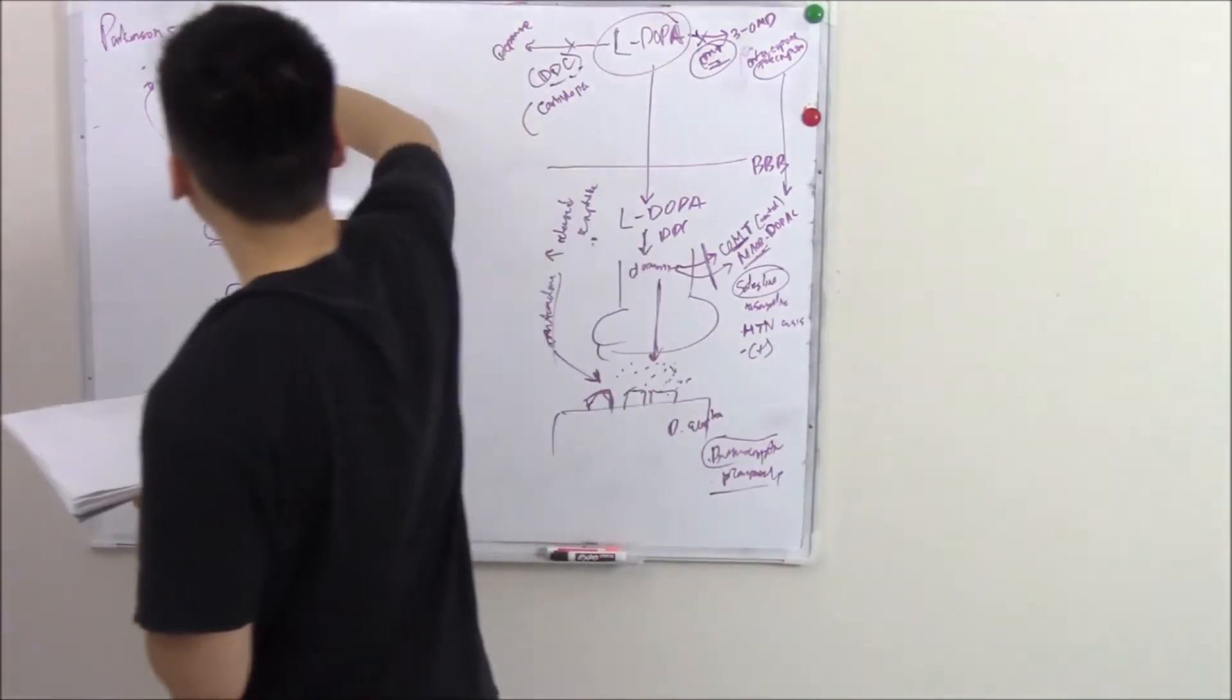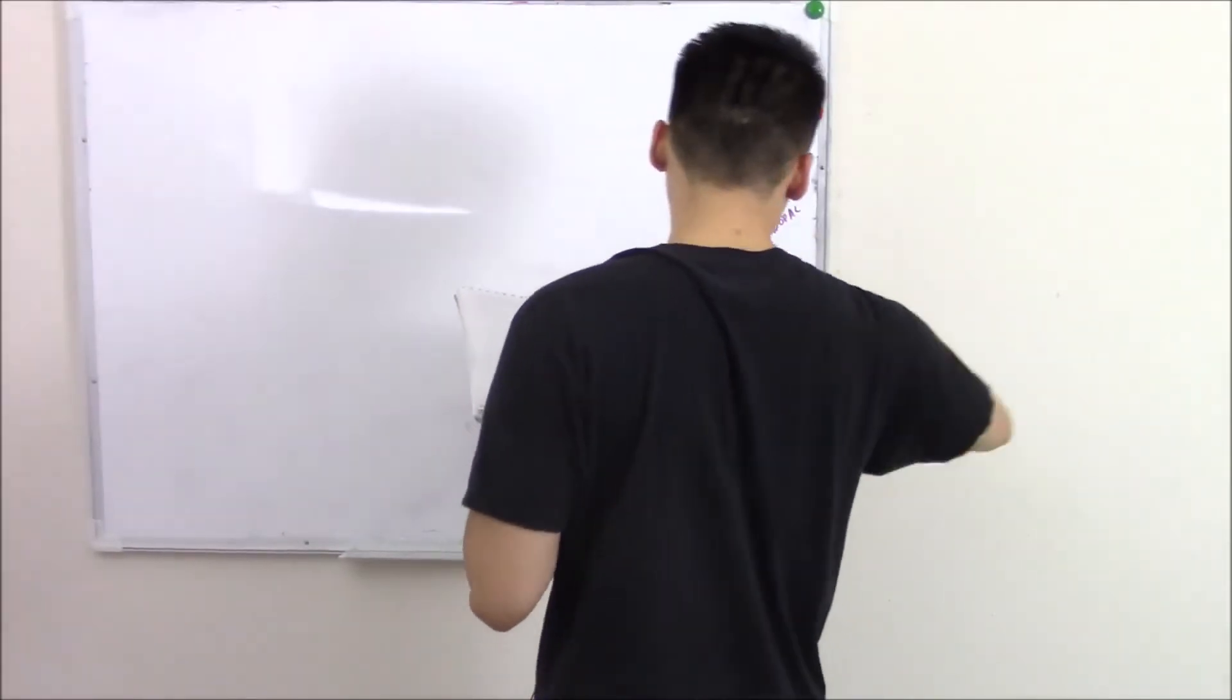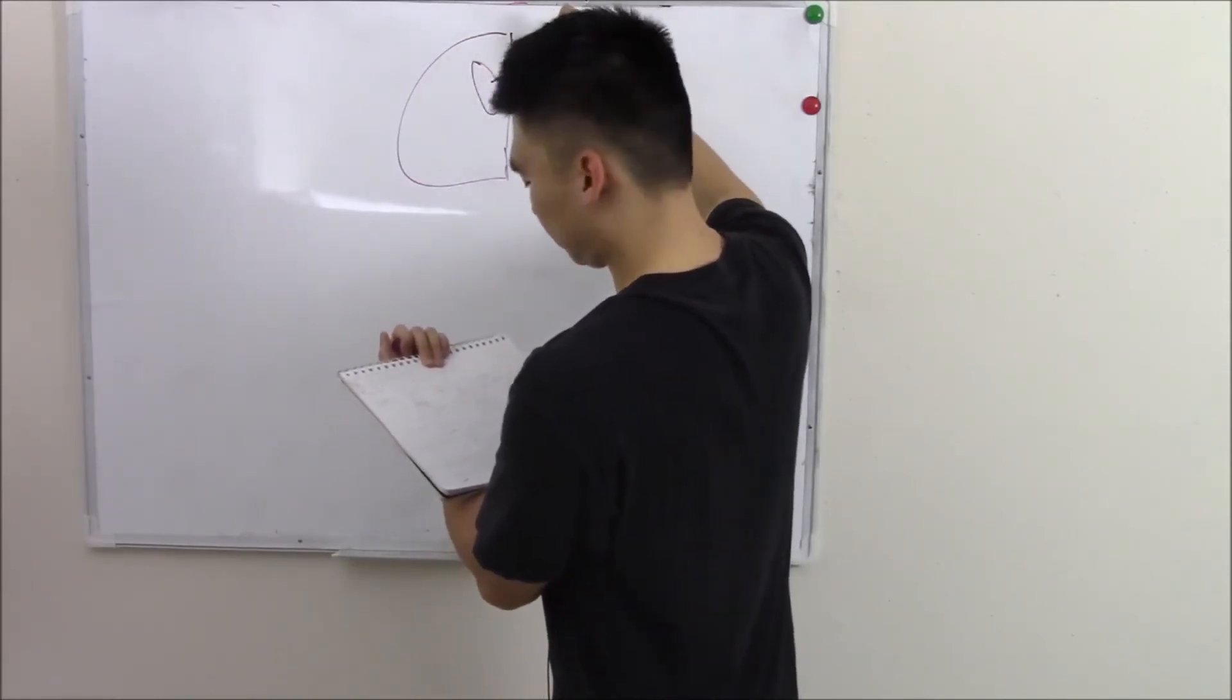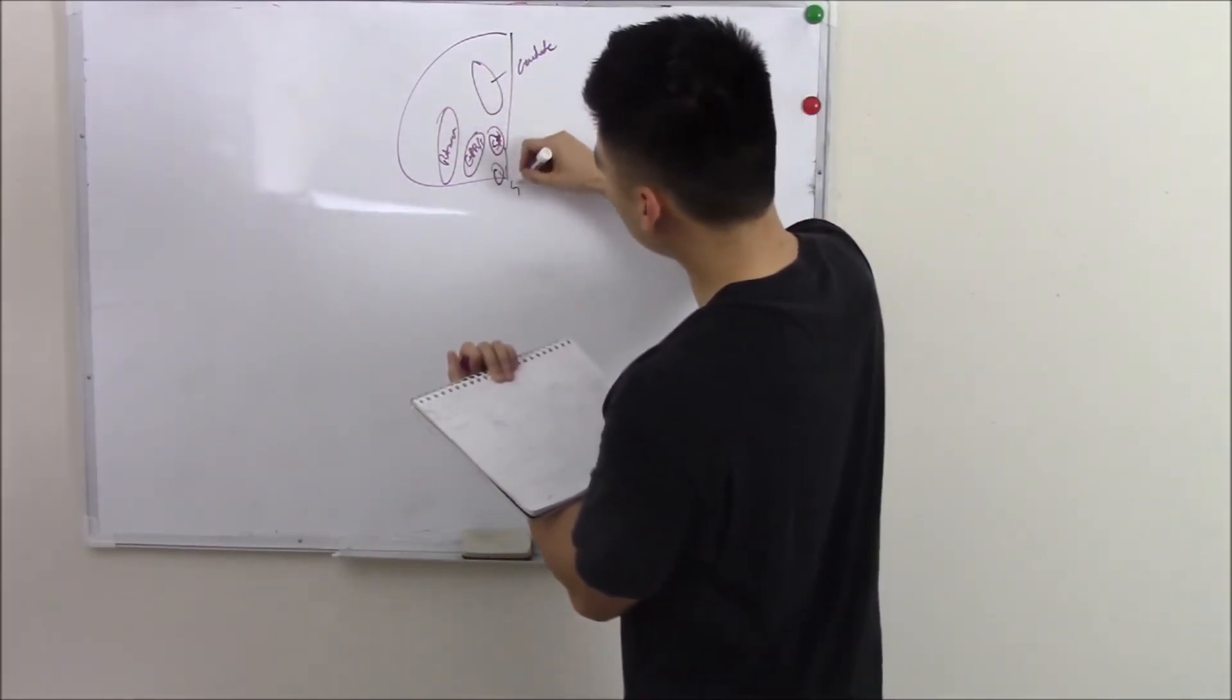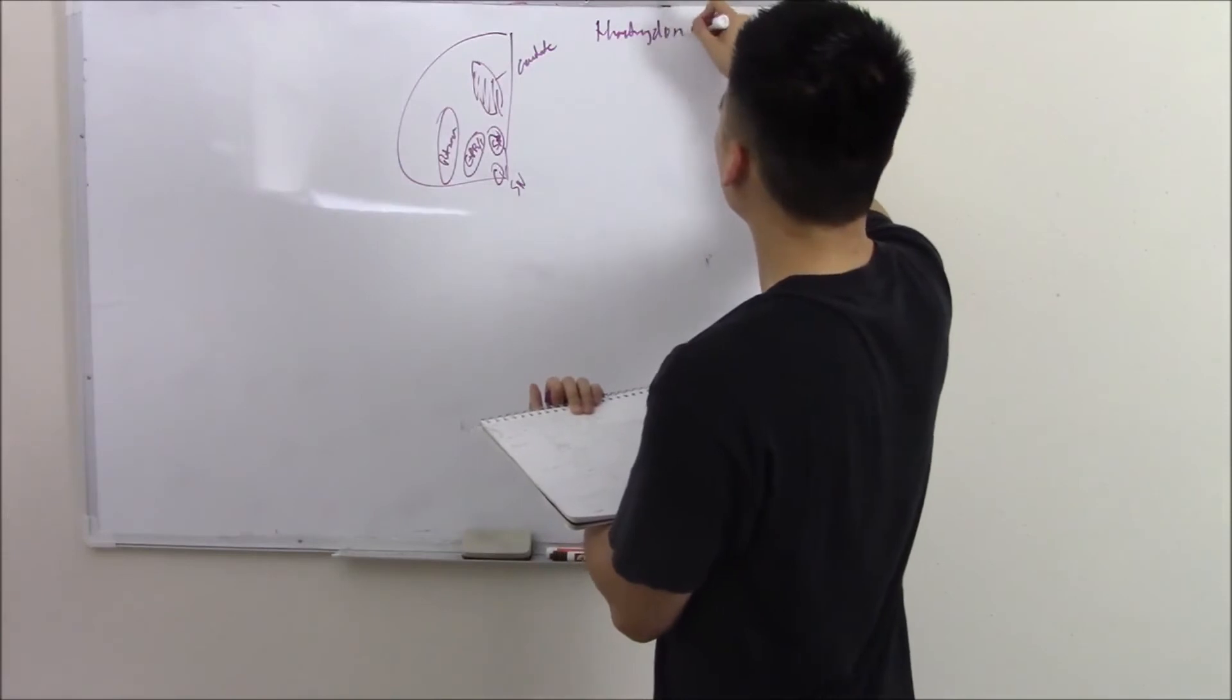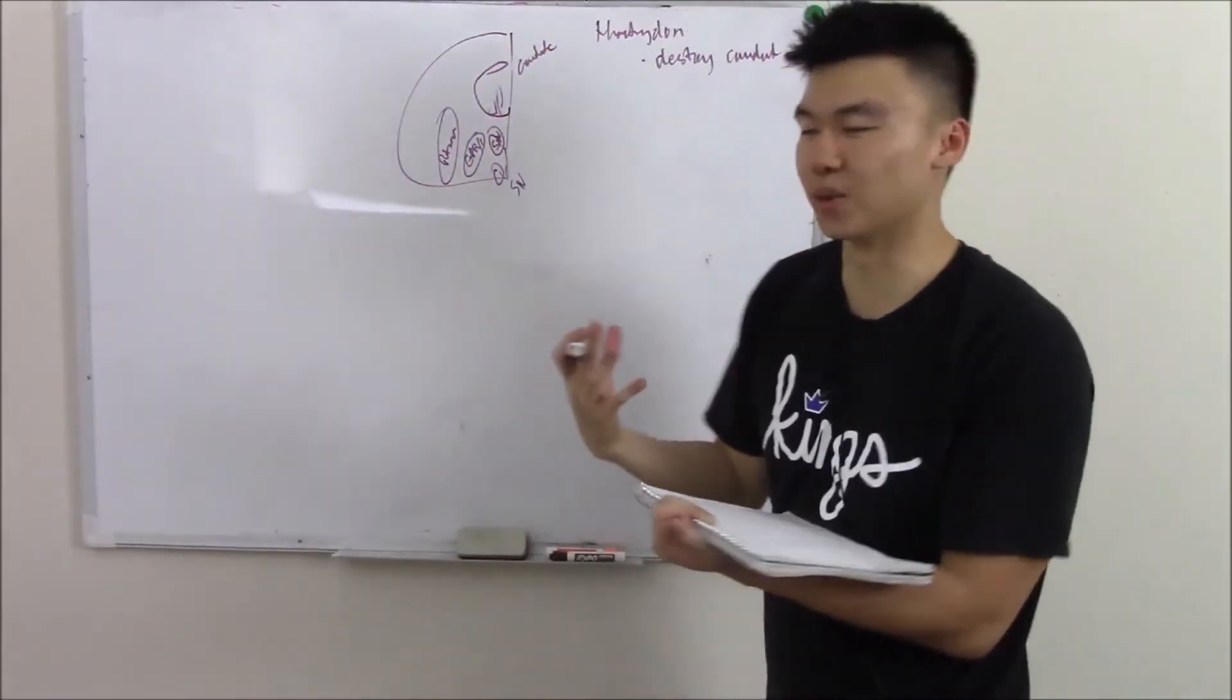Another big one is going to be Huntington's. Huntington's is an inherited disorder that absolutely destroys your striatum, mainly your caudate nucleus. So we draw our basal ganglia again. This is your caudate. This was your putamen. Globus pallidus externa and interna. Subthalamic nucleus and then your substantia nigra. So it can destroy your caudate.